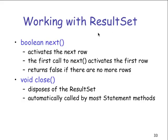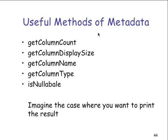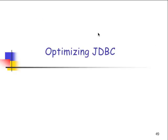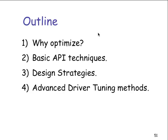We talked about the cursor, the results set, is-null, database time, and optimizing prepared statements. The second part is actually kind of interesting — optimizing JDBC. The goal is to illustrate techniques of optimizing JDBC API-based calls for the Java platform, to design better JDBC implementations, recognize potential performance bottlenecks, and look at basic API techniques, design strategies, and advanced database tuning methods.